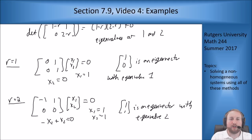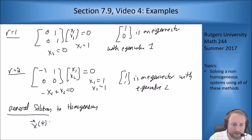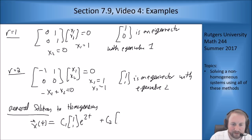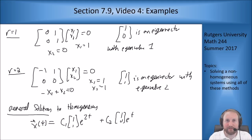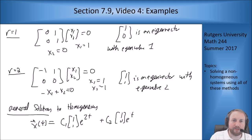I can put all of this into my general solution. I get c1 [1;1] e^{2t} + c2 [1;0] e^t. I want to match my notes, so I switch the order, but that's not a big deal. That's the general solution to the homogeneous problem.